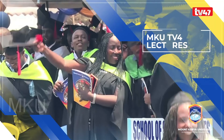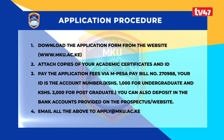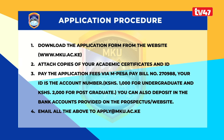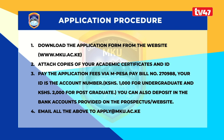We are in a digital era and Mount Kenya University knows this. To complete your online application: download the application form from the website www.mku.ac.ke, attach copies of your academic certificates and ID, pay the application fees via M-PESA paybill number 270988 with your ID as the account number — 2,000 shillings for postgraduate. You can also deposit in the bank accounts provided on the website, then email all the above to apply@mku.ac.ke.